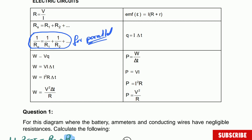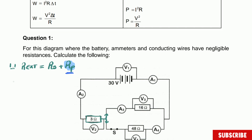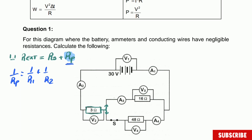The formula for parallel resistance is: 1/R_parallel = 1/R1 + 1/R2. In this case we have only two resistors in parallel — the 16 ohm and the 48 ohm.